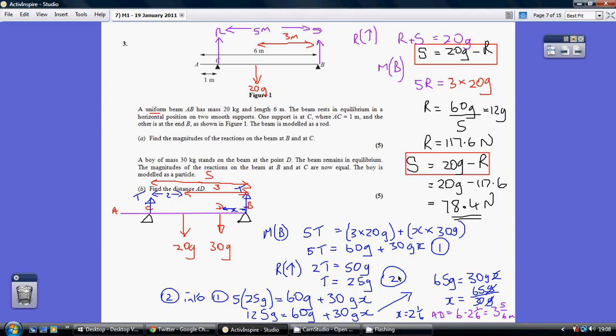So substituting 2 into 1, I get this, allowing me to work out that X is 2 and a sixth. So this distance here is 2 and a sixth metres.